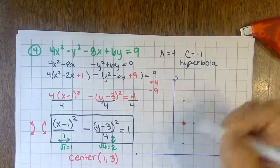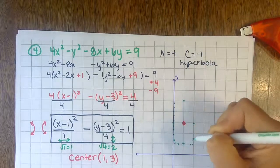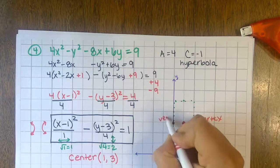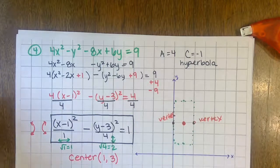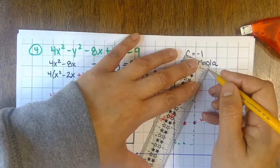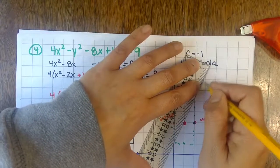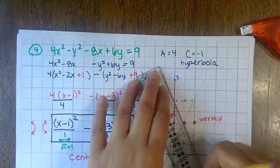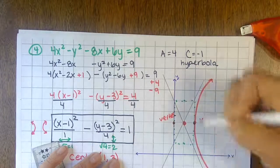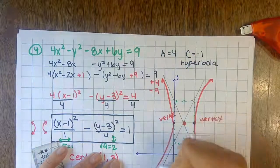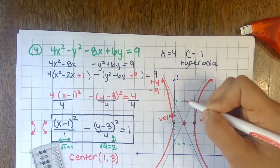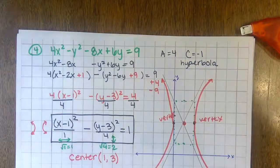To graph: plot the center at one, three. Square root of one is one, so move one unit horizontally from center. Square root of four is two, so move two units vertically. Draw a rectangle as a guide, connecting the corners as asymptotes. Since it's horizontally oriented, the vertices are on the left and right, and you draw the hyperbola through the vertices using the asymptote lines as guides.